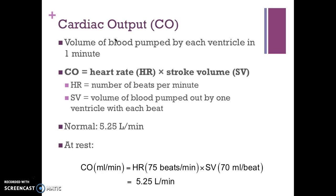Next, we're going to cover cardiac output. You have another video on this topic, but I'm covering it here as well. Cardiac output is the volume of blood pumped by a single ventricle in one minute. Cardiac output equals heart rate times stroke volume. Heart rate is in beats per minute, and stroke volume is the volume of blood pumped out by one ventricle with one beat. Normal cardiac output is 5.25 liters per minute: 75 beats per minute multiplied by a stroke volume of 70 milliliters per beat.